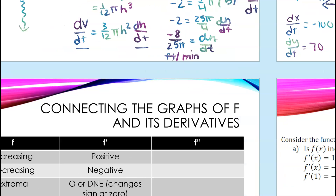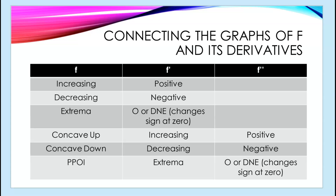Related rates connects to understanding f, f prime, and f double prime — the last part of Unit 4. A function is increasing or decreasing and has an extrema or is concave up or down based on whether the derivative is positive, negative, zero, or DNE. An extrema is a critical point — it's only an extrema if there's a sign change. Similarly, a POI on f only occurs if f'' has a sign change.